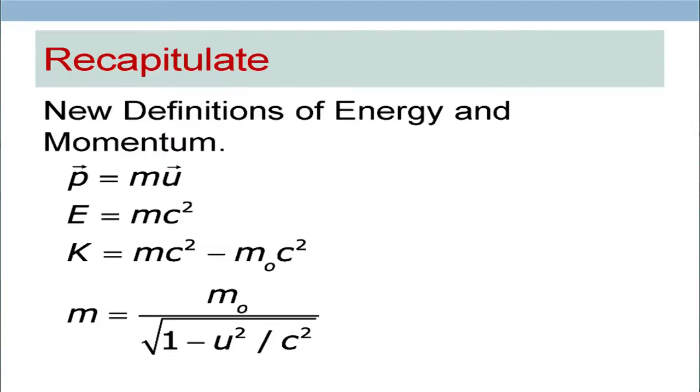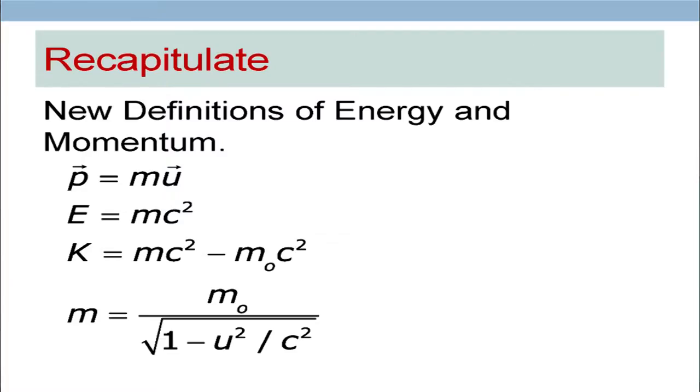In the classical limit, which means when the velocity of the particle is much smaller in comparison to the speed of light, this reduces to the classical expression of momentum. When u is much smaller than c, the factor m will be essentially equal to m0, and this expression reduces to the classical expression of momentum, which is m0 times u.